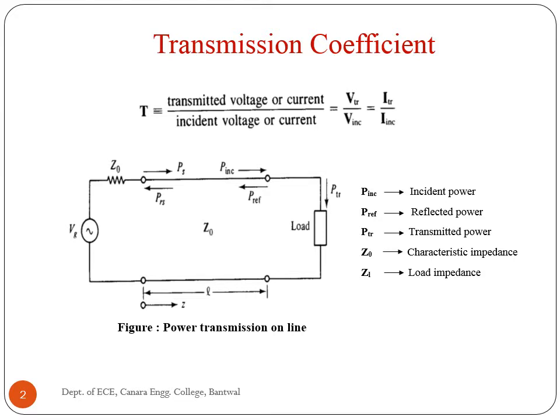Dear students, in this class we are going to study transmission coefficient, standing wave, and standing wave ratio. The first topic of the class is transmission coefficient. The transmission coefficient is a measure of how much of an electromagnetic wave passes through a surface or an optical element.